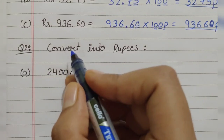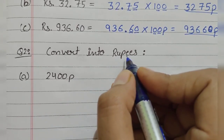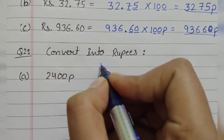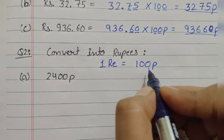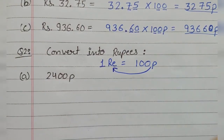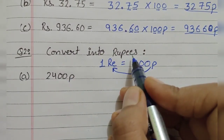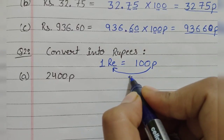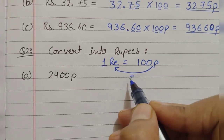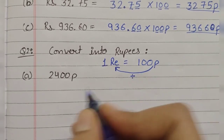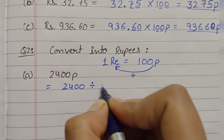Now move to question number 2: Convert into rupees. Here we have a given amount in paise and we have to convert it into rupees. The relation between rupees and paise is: in 1 rupee we have 100 paise. This time we have to go in reverse direction — from paise to rupees. Whenever we move from the smaller unit to the bigger one, we always divide. So here we will write 2400 and divide it by 100.